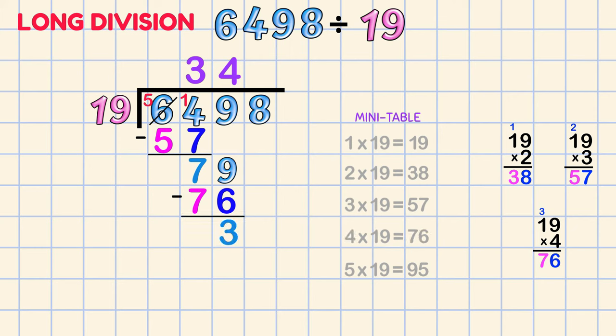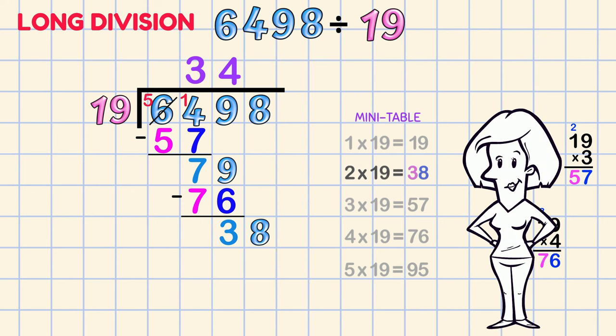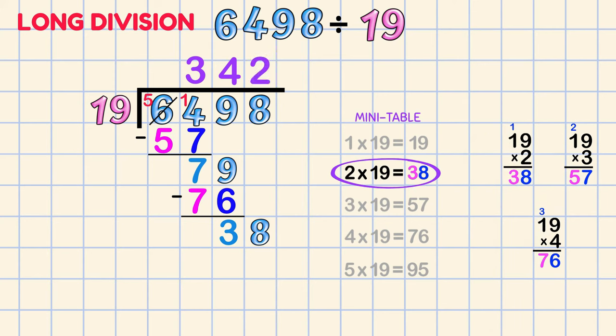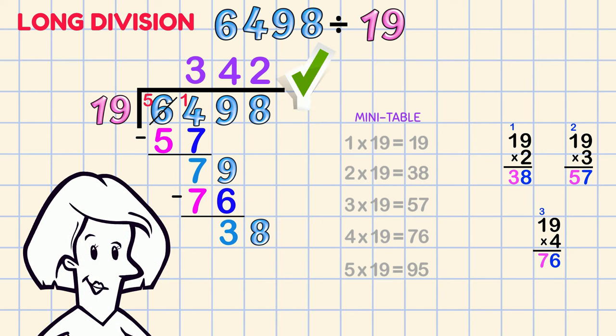3! Bring down the last digit. How many 19s are 38? And look at that! It's right here! 2 x 19 is 38. Put the 2 on the answer line. There's no remainder so we're all done!